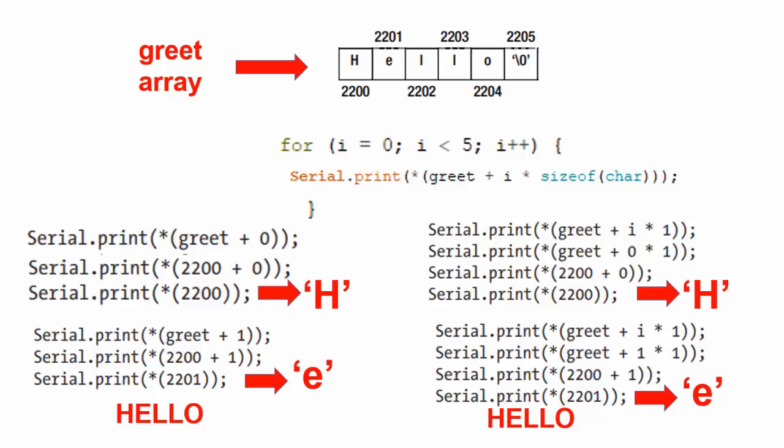The process repeats until the loop ends, at which time the word hello is on the display. This exercise should convince you that using the array name greet is the same as the l value of the greet array.